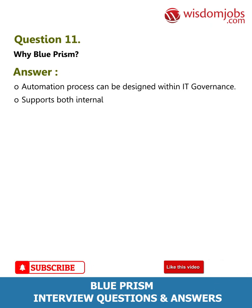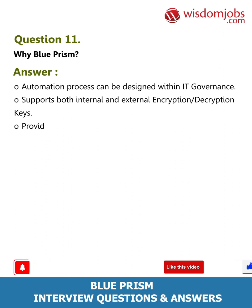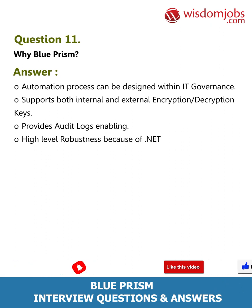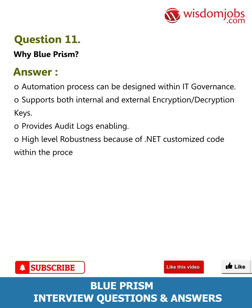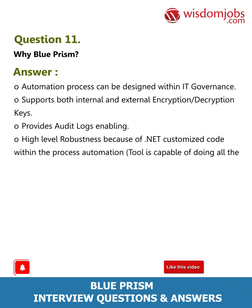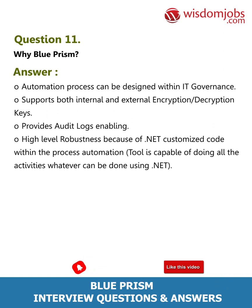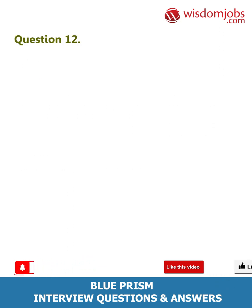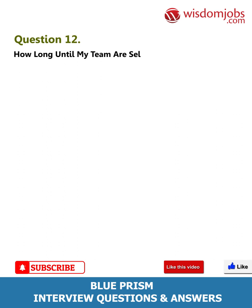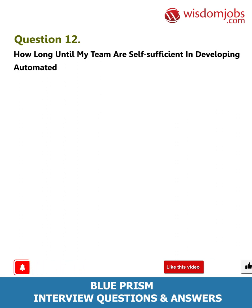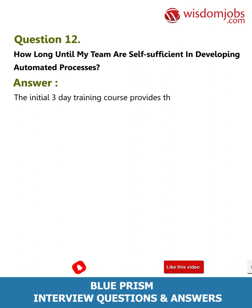Question 11: Why Blue Prism? Answer: Automation processes can be designed within IT governance. Blue Prism supports both internal and external encryption/decryption keys, provides audit logs, and offers high-level robustness because of .NET. Customized code within the process automation tool is capable of doing all the activities that can be done using .NET. Question 12: How long until my team are self-sufficient in developing automated processes?